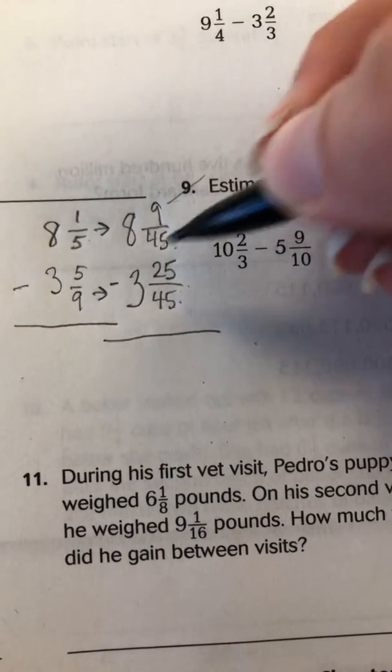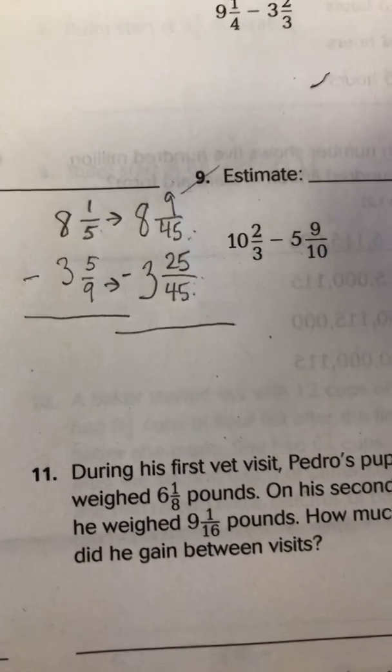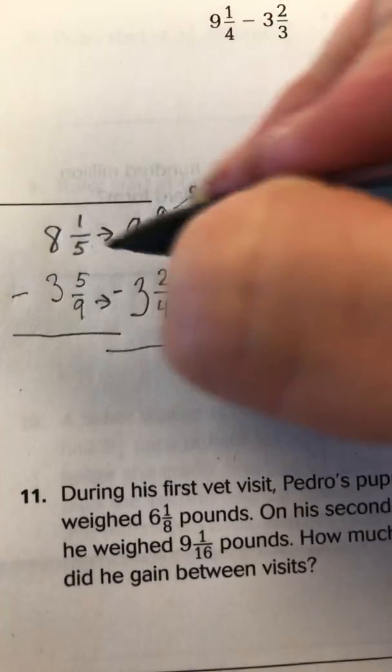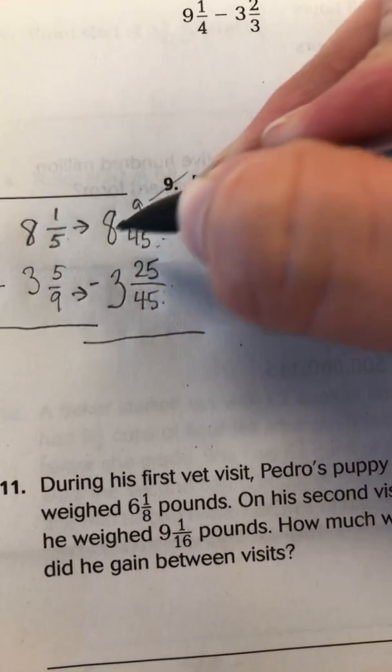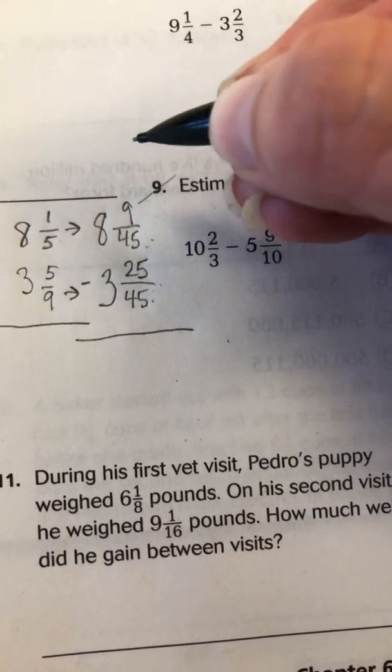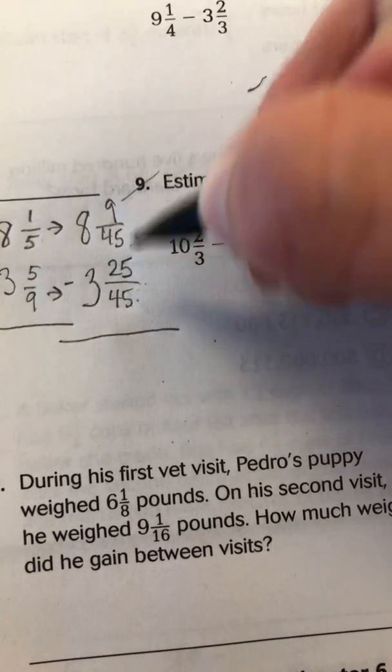So regrouping with fractions or mixed numbers is going to be different from regrouping with traditional whole numbers. So watch how we do it. We are going to take a whole number from here, from our whole number column, and we are going to convert that whole number into fraction form and put it in our fraction column.